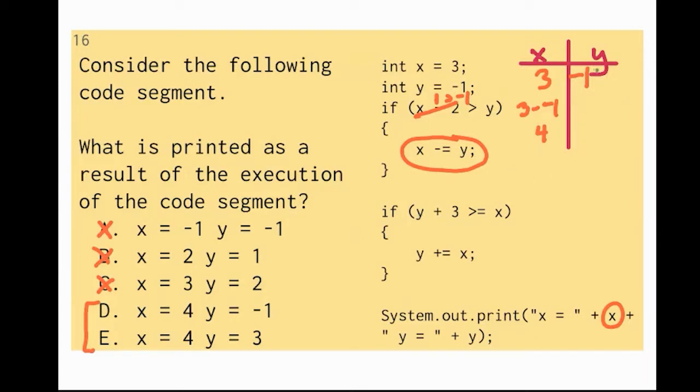Then it says, if y plus 3, well, y is still negative 1. So I'm just going to put this as 2. Is greater than or equal to x, or is it greater than or equal to x if this is 4? No. So that means this does not get run.